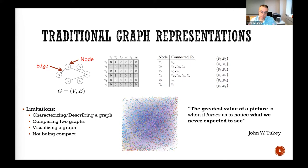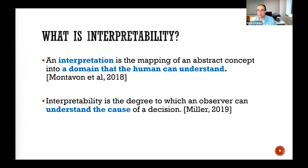We're trying to address some of these issues with interpretable network representations. An interpretation is a mapping of an abstract concept into a domain that humans can understand, and interpretability is the degree to which you can understand the cause of a decision. In a network setting, this means either the representation itself has clear meaning, or there is some post-hoc explanation.